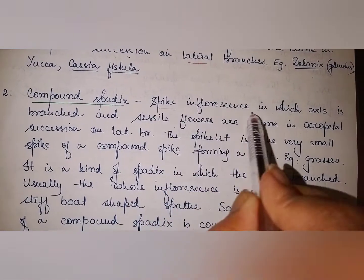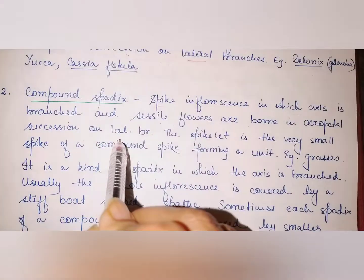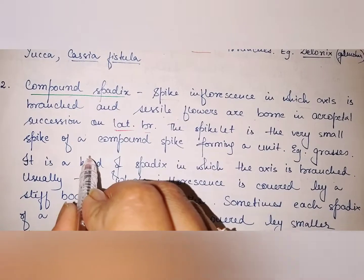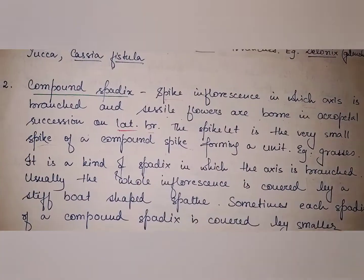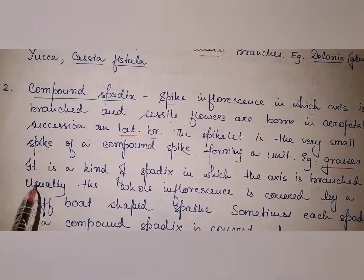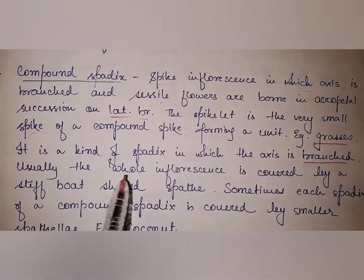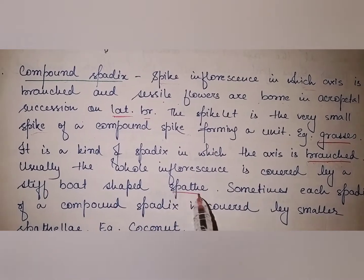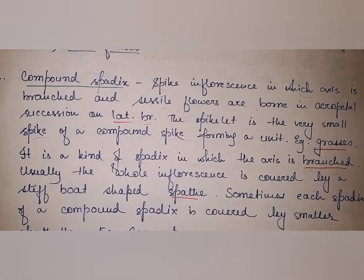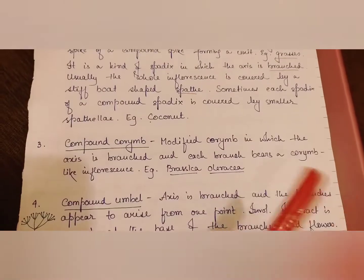Next is compound spike: the axis is branched and sessile flowers are born in acropetal succession on lateral branches. The spikelet is the very small spike of a compound spike forming a unit — this is seen in grasses. Next is compound spadix: it is a kind of spadix in which the axis is branched. The whole inflorescence is usually covered by a stiff boat-shaped spathe, and sometimes each spadix of the compound spadix is covered by smaller spathes. It is found in coconut (Cocos nucifera).